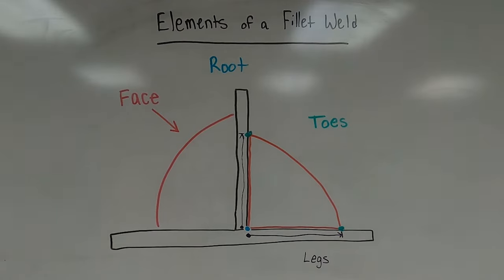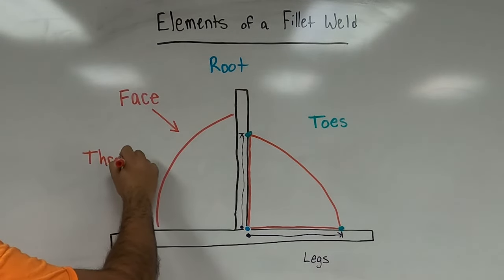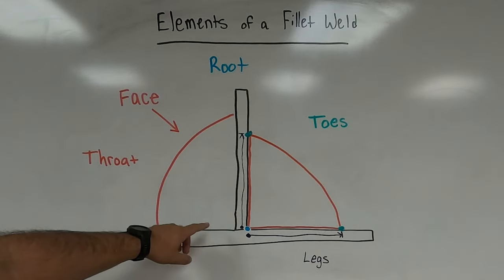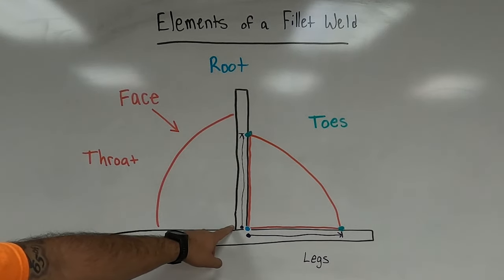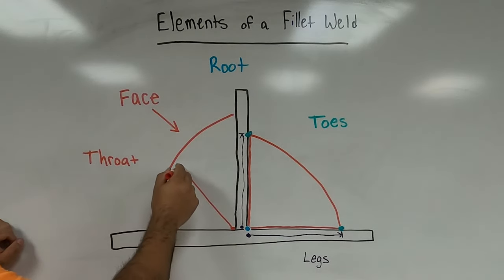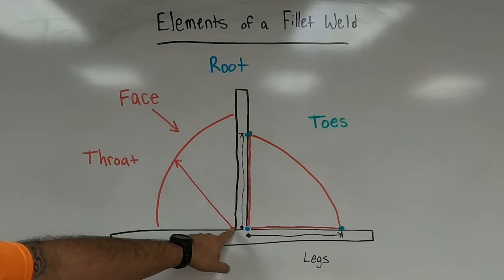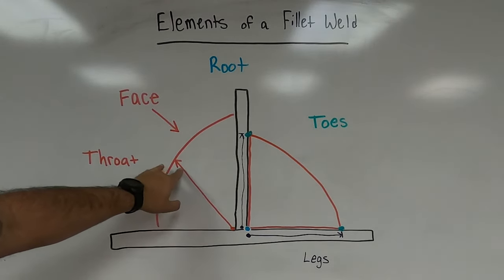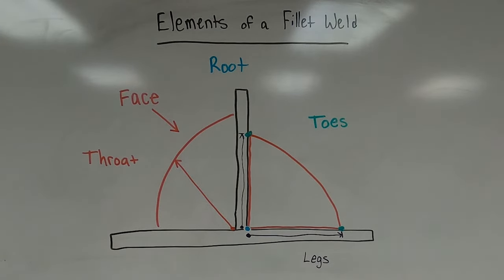The last element is the throat. The throat is the distance from the weld root to the face. It's not the distance straight across to the side edges — it's basically the distance to the center of the face, which theoretically should be the highest point on the surface.